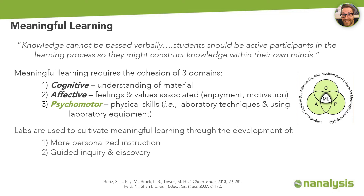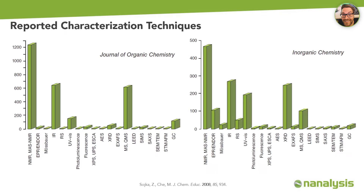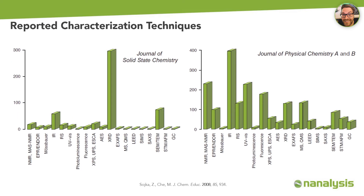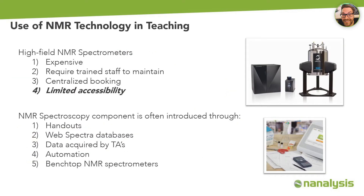Guided inquiry and discovery allow students to learn in the best possible way. Therefore, it is common to include characterization techniques within the laboratory course. However, if you compare how often techniques are reported in the literature versus how often students use them in the lab, there is a mismatch. By far, the most reported analytical method in organic and inorganic chemistry publications is NMR spectroscopy. Yet NMR technology in teaching is often still limited, addressed by the fact that high-field NMR spectrometers are not easily affordable or accessible due to high capital costs and operating expenditures.